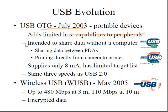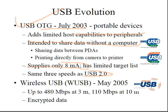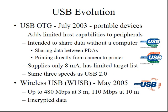USB On-The-Go, introduced in July 2003, targets portable devices and adds limited host capabilities to peripherals, intended to share data between devices. It has a limited target list and supports the same three speeds as USB 2.0, but only 8 Mbps usable. Wireless USB, introduced in May 2005, provides up to 480 Mbps at 3 meters and 110 Mbps at 10 meters.